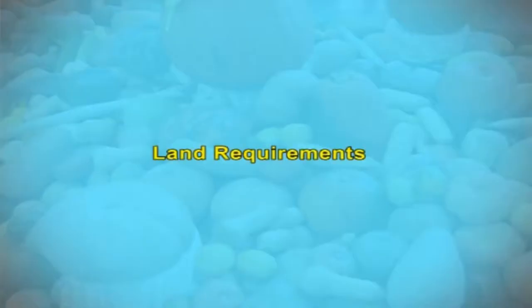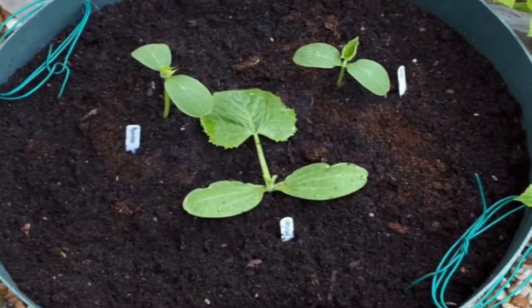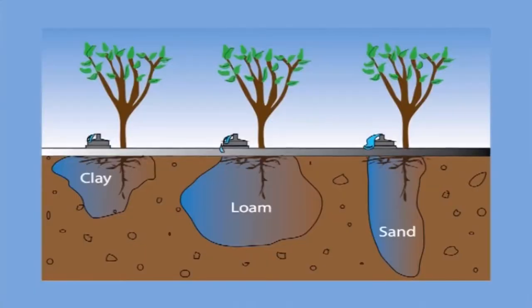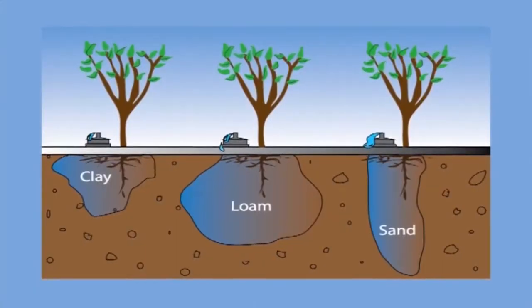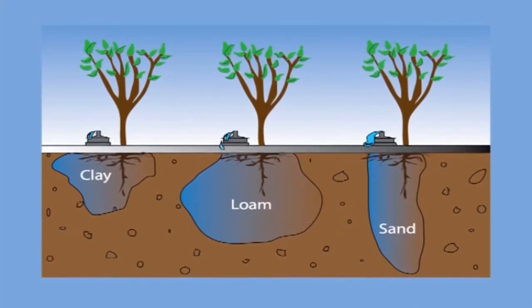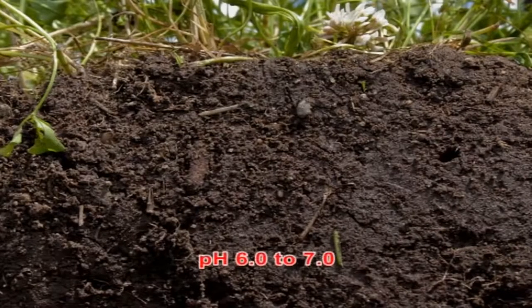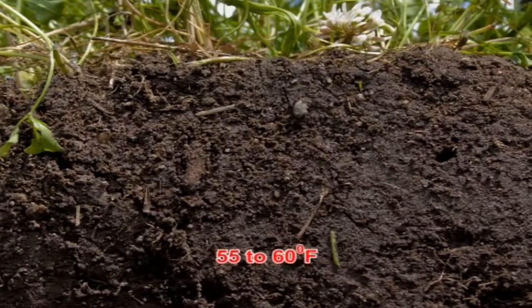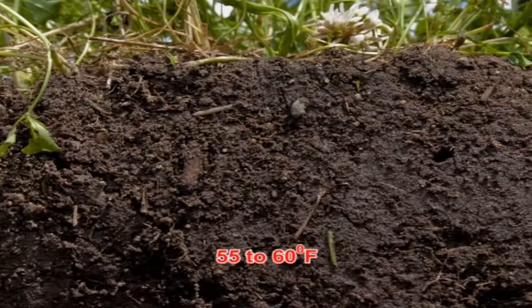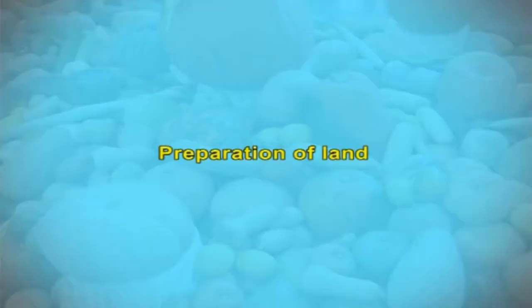Coming to land requirements, the land should be free of volunteer plants and the soil of the selected fields should be well drained and aerated. Cucurbits are grown successfully in many kinds of soil from sandy to heavy soil and are fairly tolerant to acid soils. They prefer a soil pH of 6 to 7, a soil temperature of 50 to 60°F, and should have moderate to high organic matter. The field is prepared to a good tilth by 1 to 2 deep ploughings, followed by 2 to 3 harrowings and leveling.